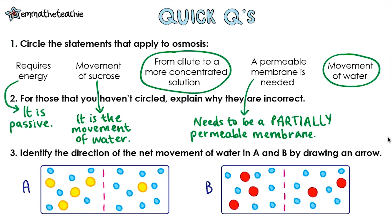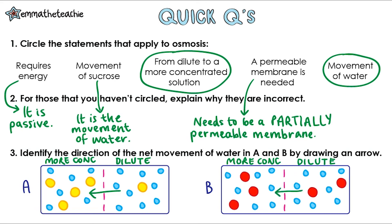Question three: identify the direction of the net movement of water in A and B by drawing an arrow. First, identify which side is dilute and which is concentrated. In diagram A, the right side has more water molecules, so osmosis moves water from right to left. In diagram B, tallying up the water molecules gives seven on the left and eight on the right. The right side is more dilute, and the left side is more concentrated, so water molecules move from right to left.